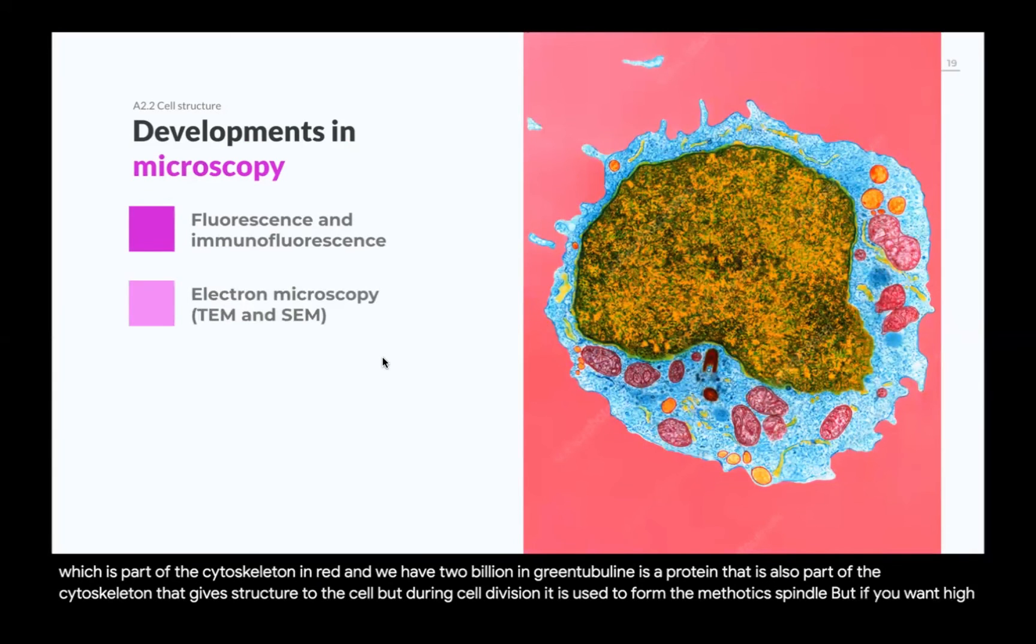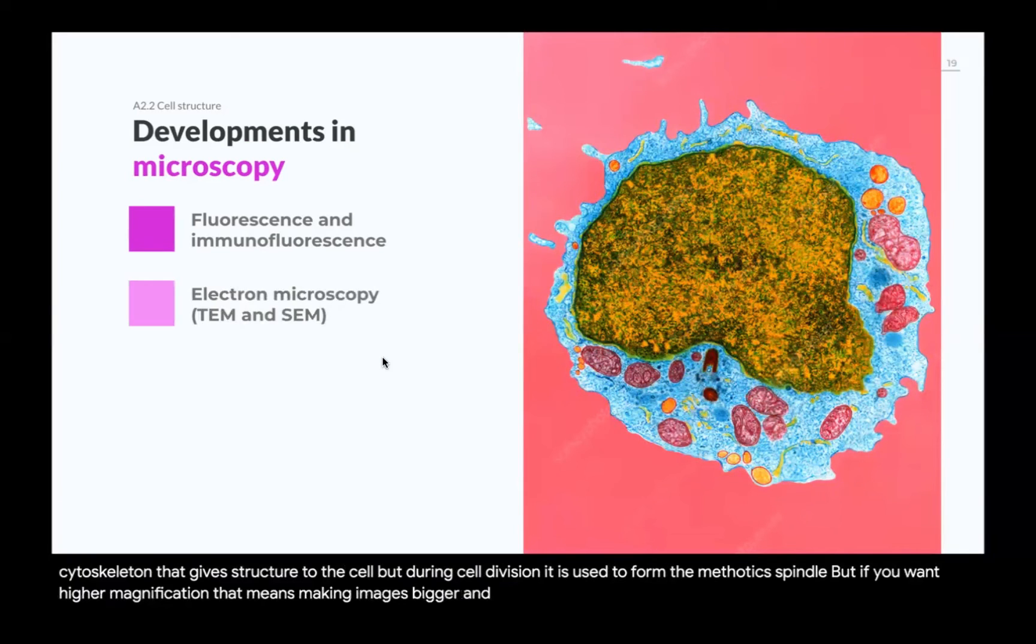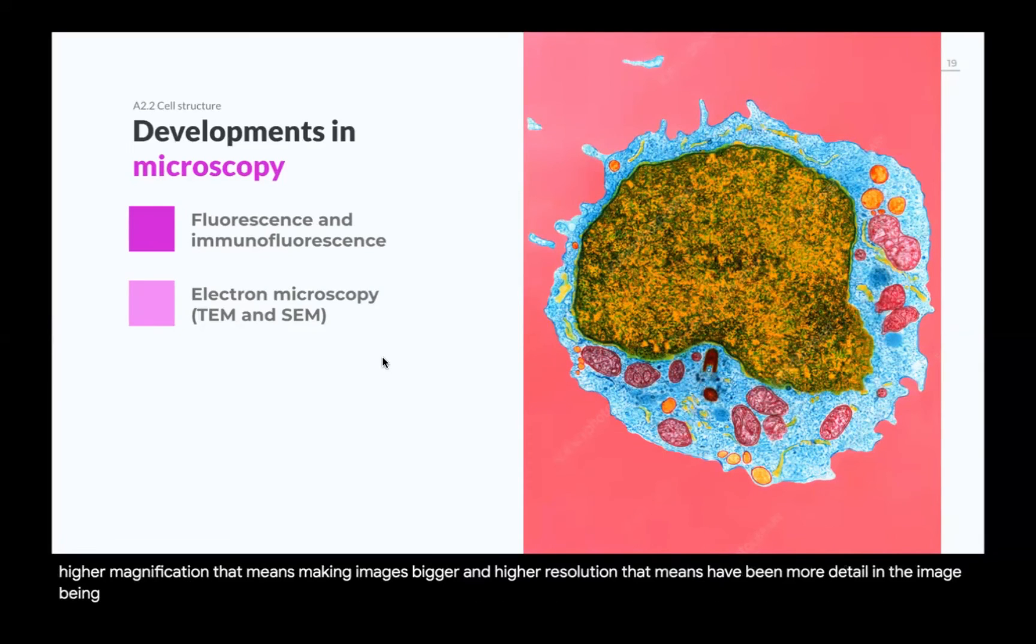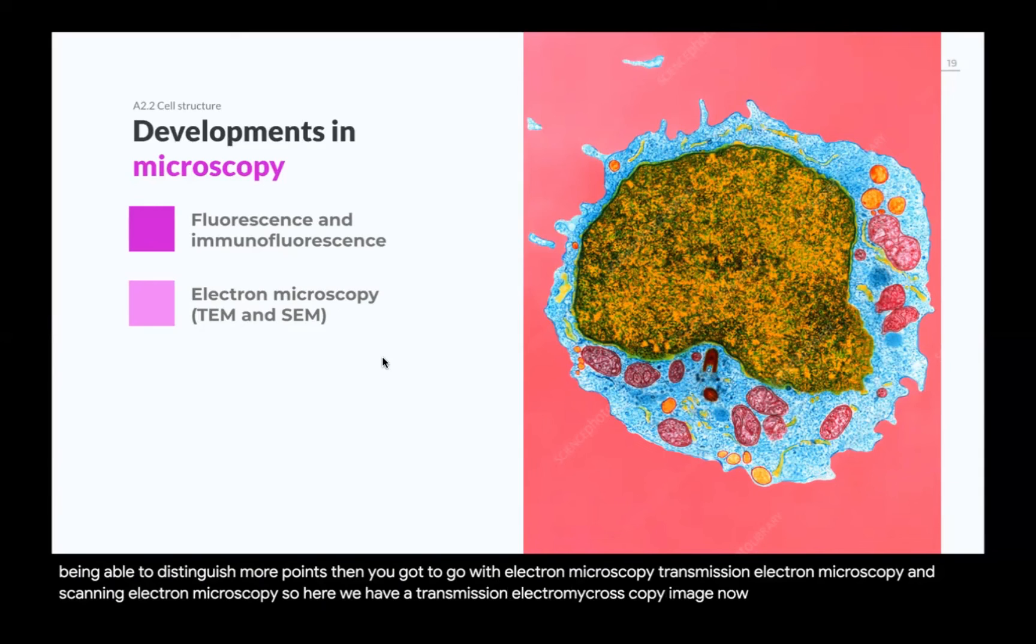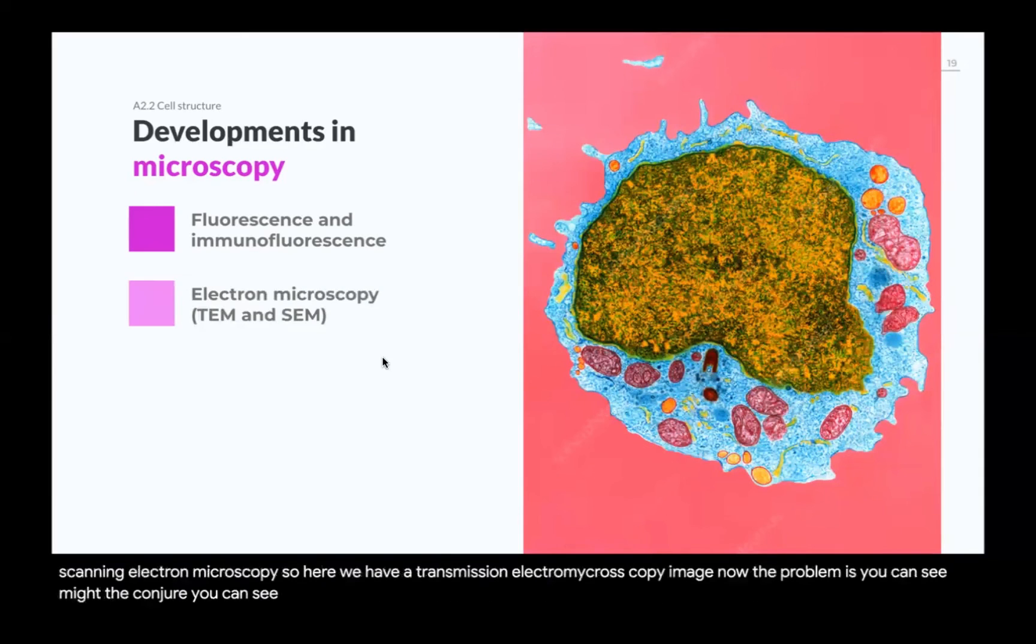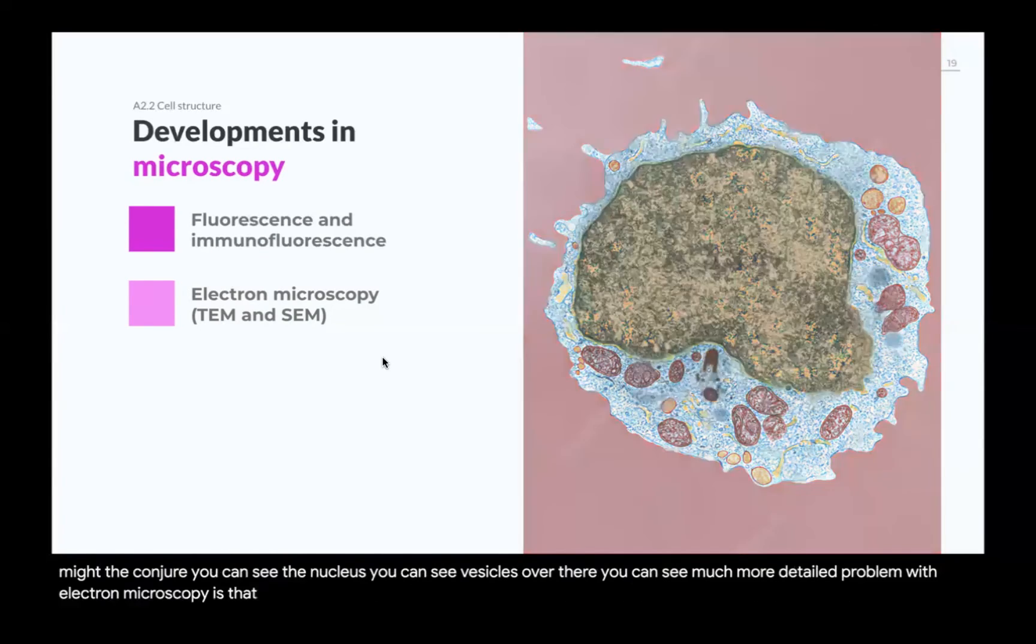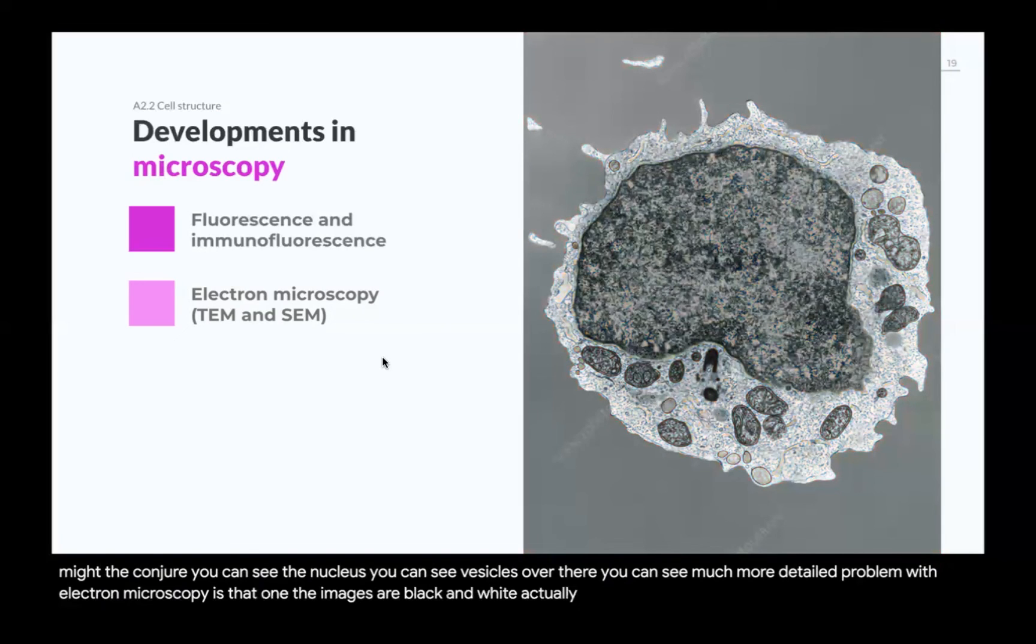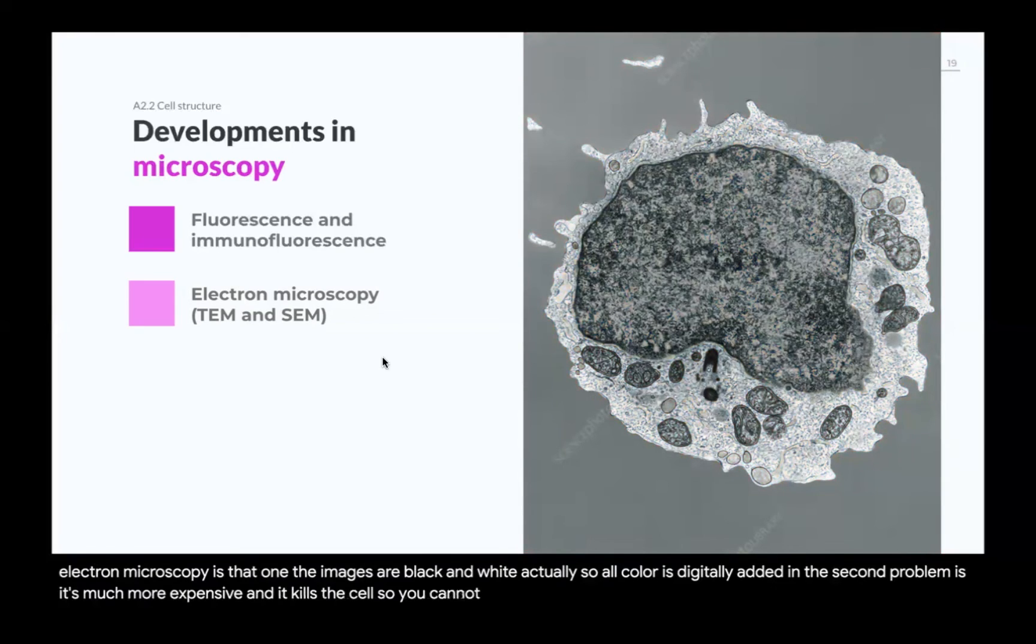But if you want higher magnification, that means making images bigger, and higher resolution, that means having more detail in the image, being able to distinguish more points, then you got to go with electron microscopy. Transmission electron microscopy and scanning electron microscopy. So here we have a transmission electron microscopy image. Now, the problem is, you can see mitochondria, you can see the nucleus, you can see vesicles over there, you can see much more detail. The problem with electron microscopy is that, one, the images are black and white, actually, so all color is digitally added. And the second problem is, it's much more expensive, and it kills the cell. So you cannot see processes like cell division happening with electron microscope.